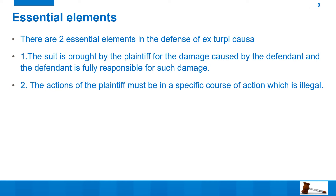The essential elements for the defense of ex turpi causa are: number one, the suit is brought by the plaintiff for the damage caused by the defendant and the defendant is fully responsible for such damage; and second, the action of the plaintiff must be in a specific course of action which is illegal. For example, if a plaintiff goes to defendant and asks for a contract of prostitution, this contract itself is illegal. Under such a contract, no one can sue anyone because the contract itself is illegal or immoral.